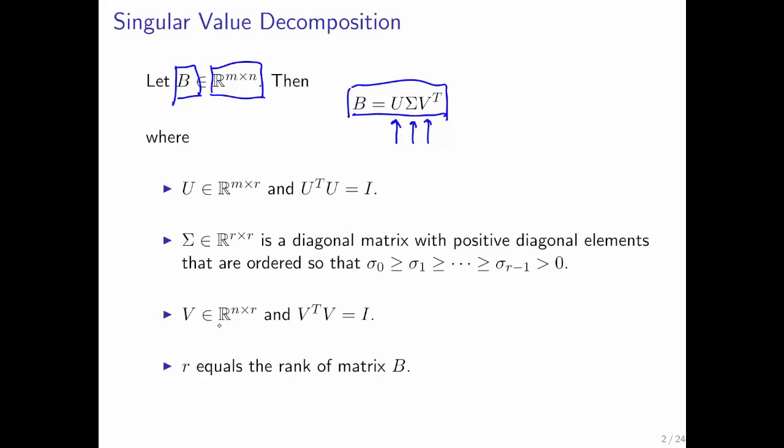Where both U and V have orthonormal columns. r here is the rank of the matrix. Recall that that's the number of linearly independent columns of B in this particular case. Sigma is a square matrix with entries sigma 0 through sigma r minus 1 on the diagonal, all of which are positive, and they are ordered from largest to smallest.